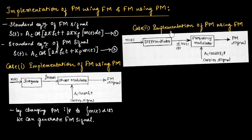Now let us consider Case 2: to implement phase modulation using frequency modulation. This is the block diagram used to generate the phase modulated signal using a frequency modulator.